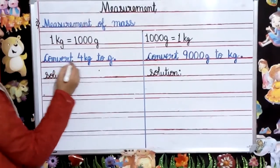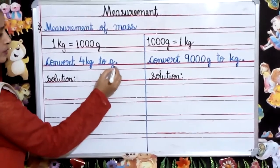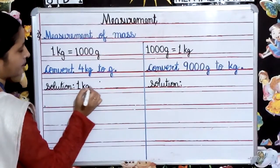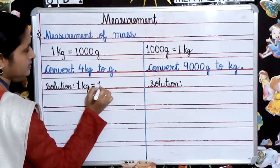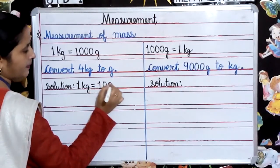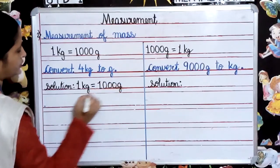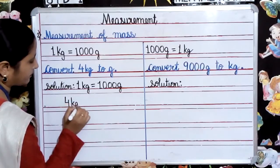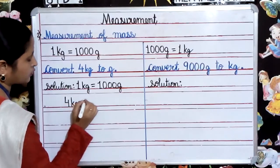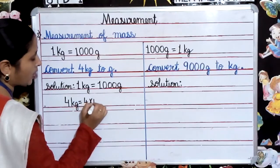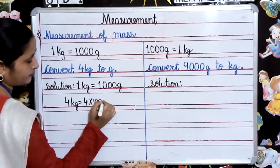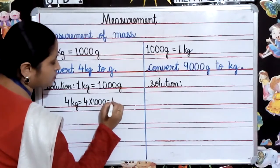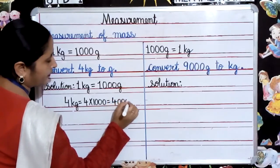Here we have to convert 4 kilograms to grams. Solution: 1 kilogram is equal to 1000 grams. So 4 kilograms is equal to 4 multiplied by 1000, which equals 4000 grams.